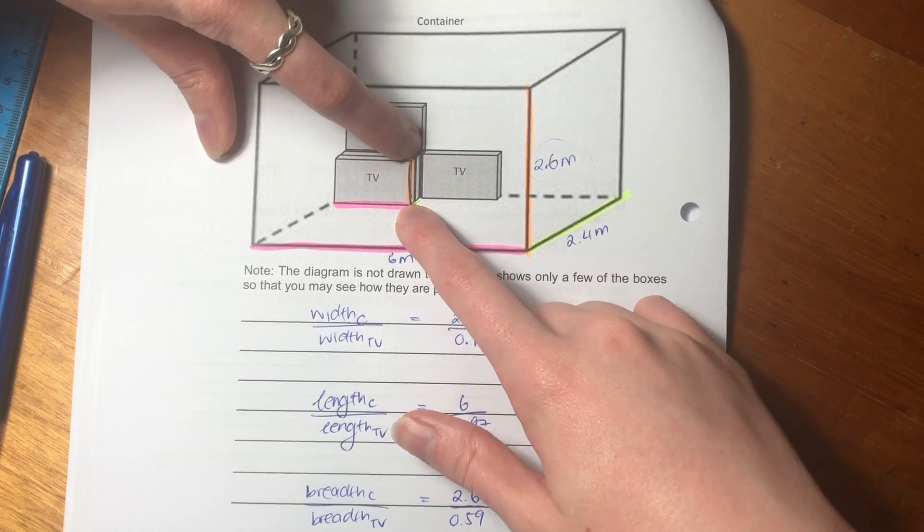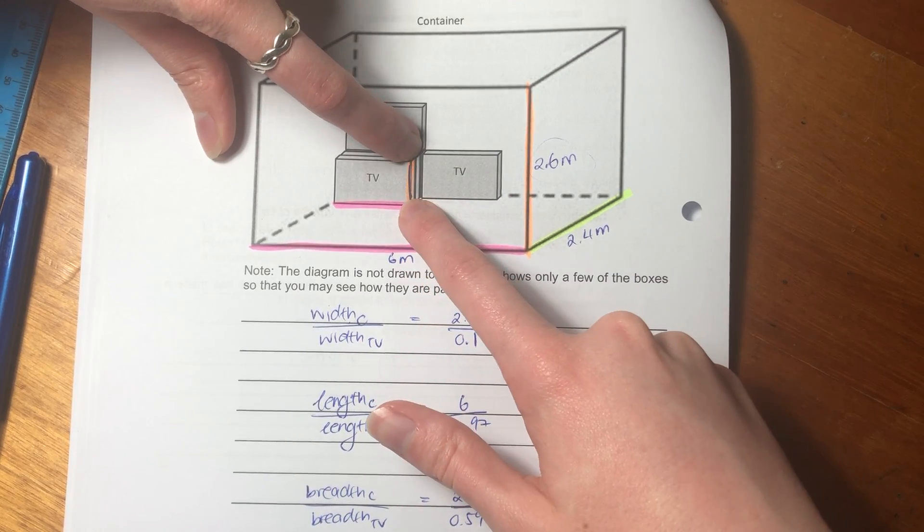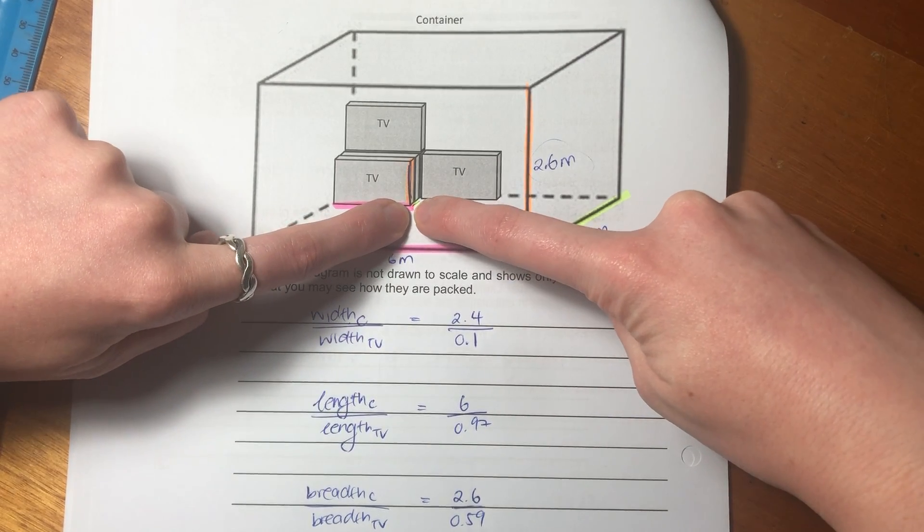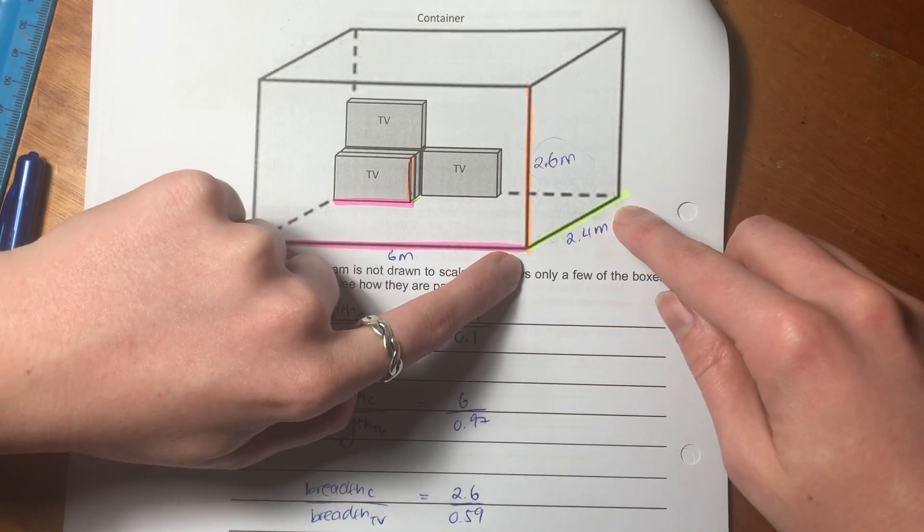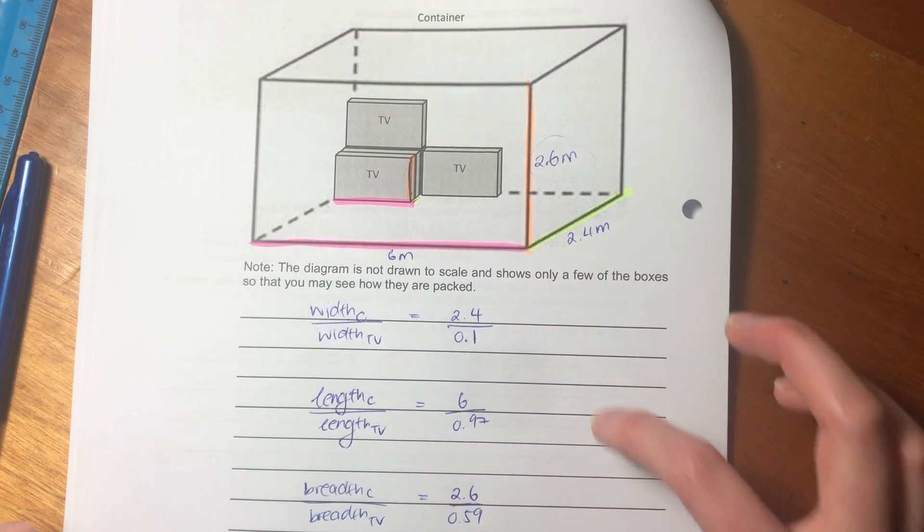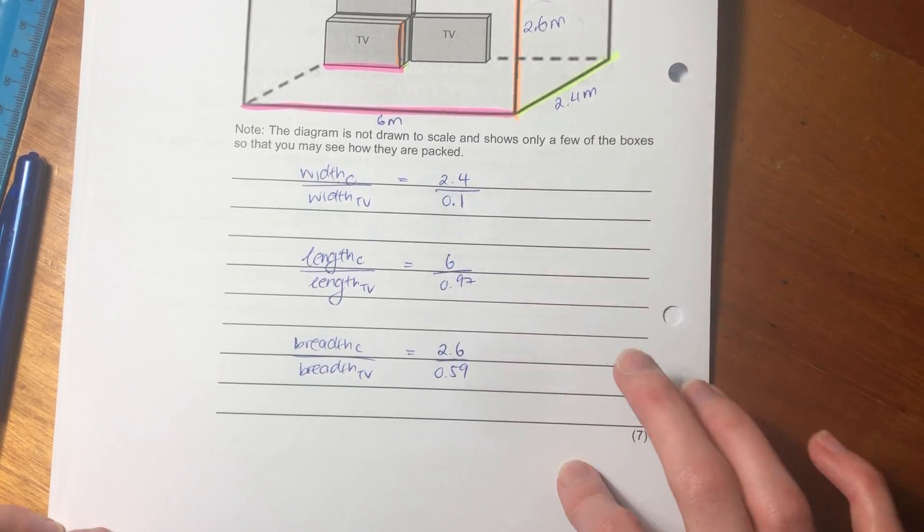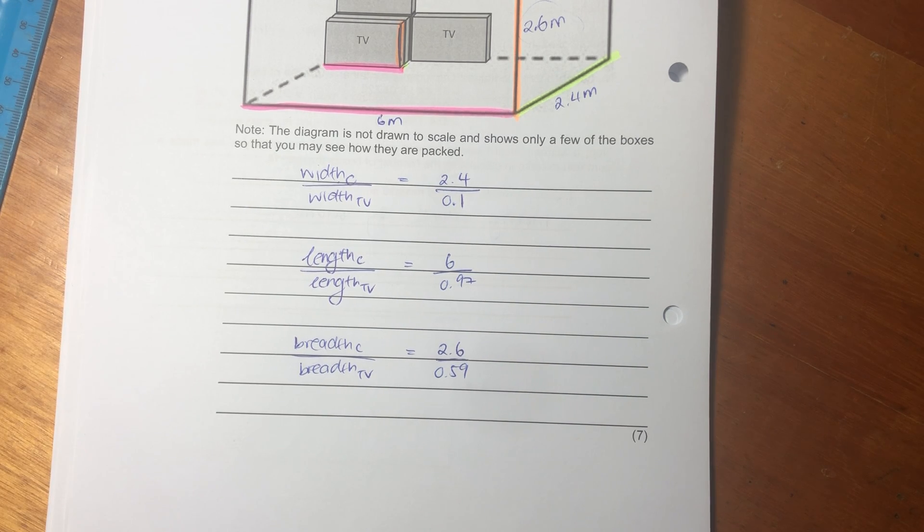So basically what we're saying is, how many of these lengths on the TV can fit into that length of the container? How many heights or breadths, in this case, on the TV can fit into that height of the container? And how many widths of the TV can fit into that width? And that will give us, and then we'll get the answer for those three. And together, if we multiply those answers, it will give us the number of TVs. And that is more accurate than just saying volume divided by volume, because you've taken into consideration that the TVs are a set shape.